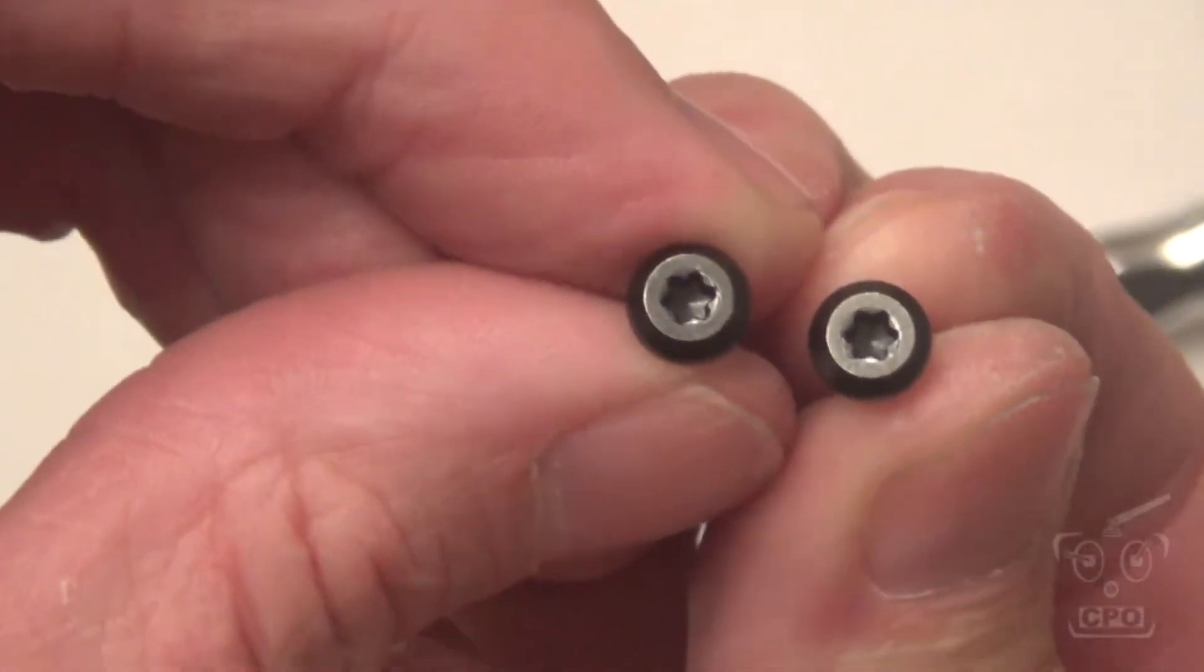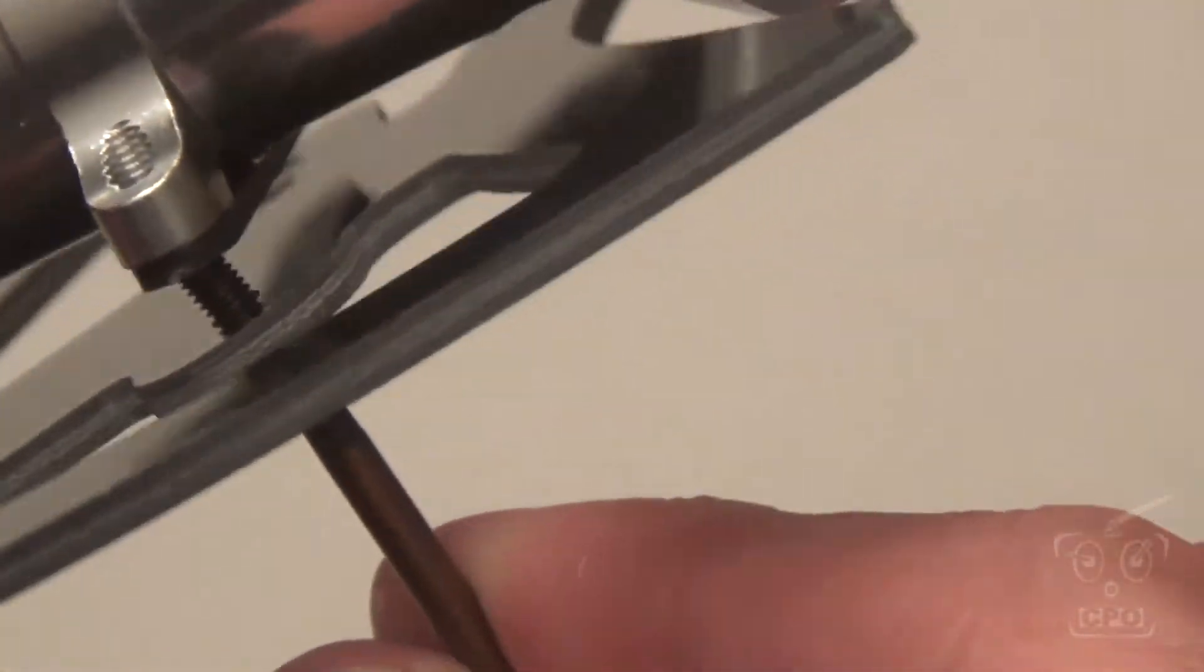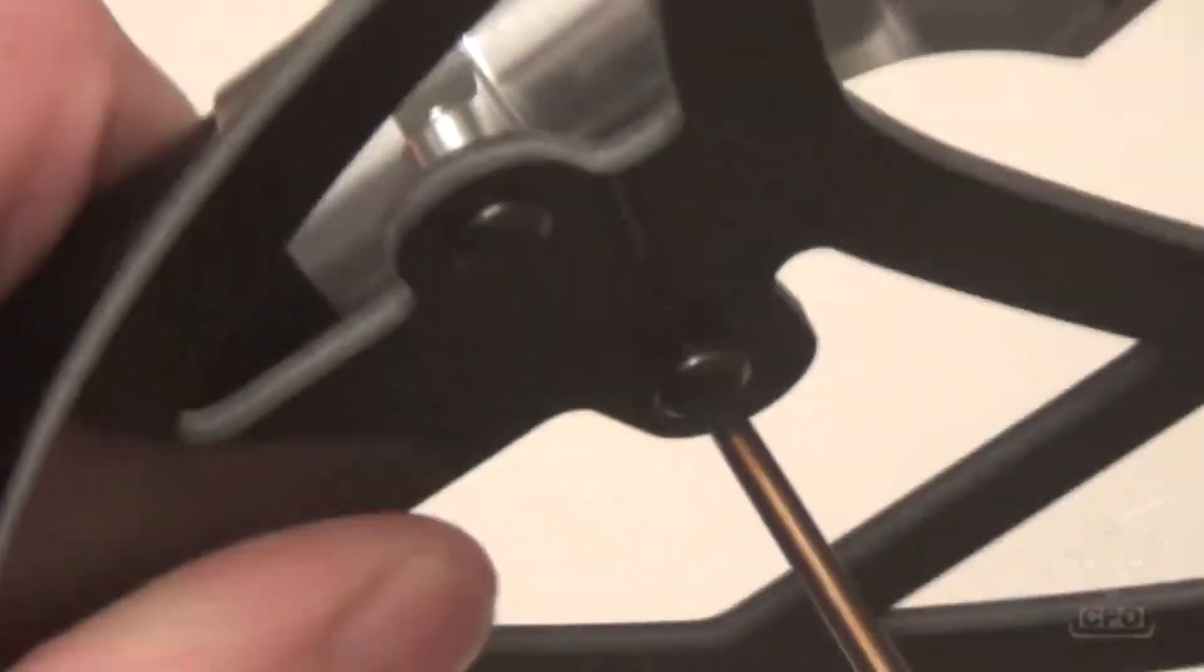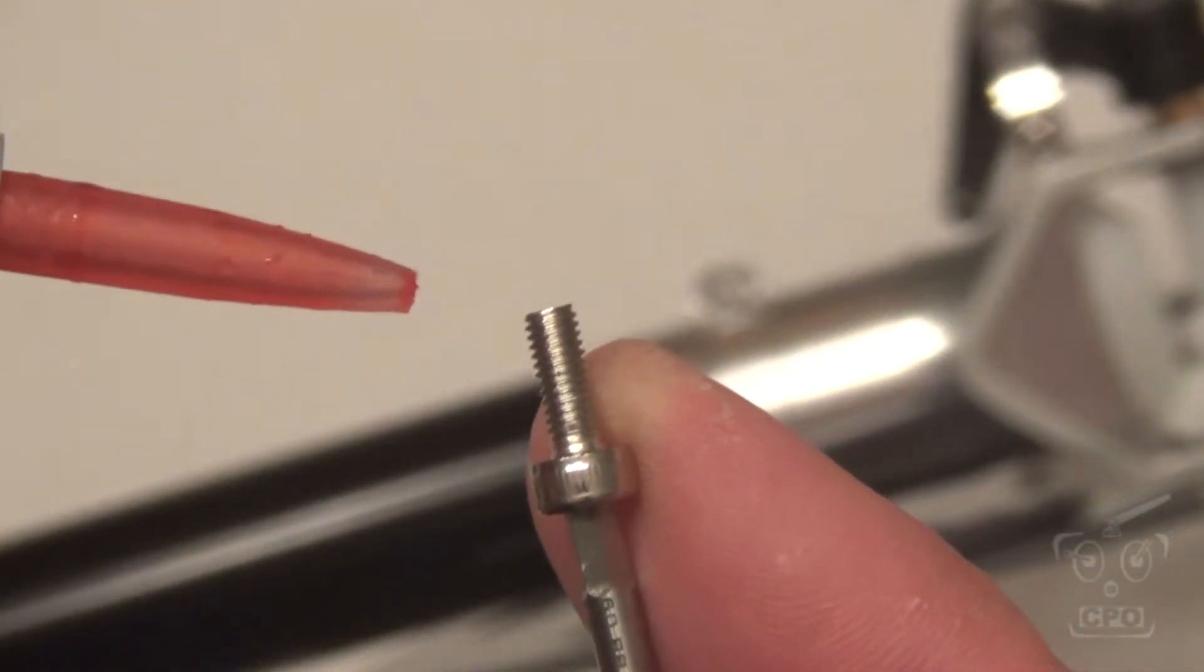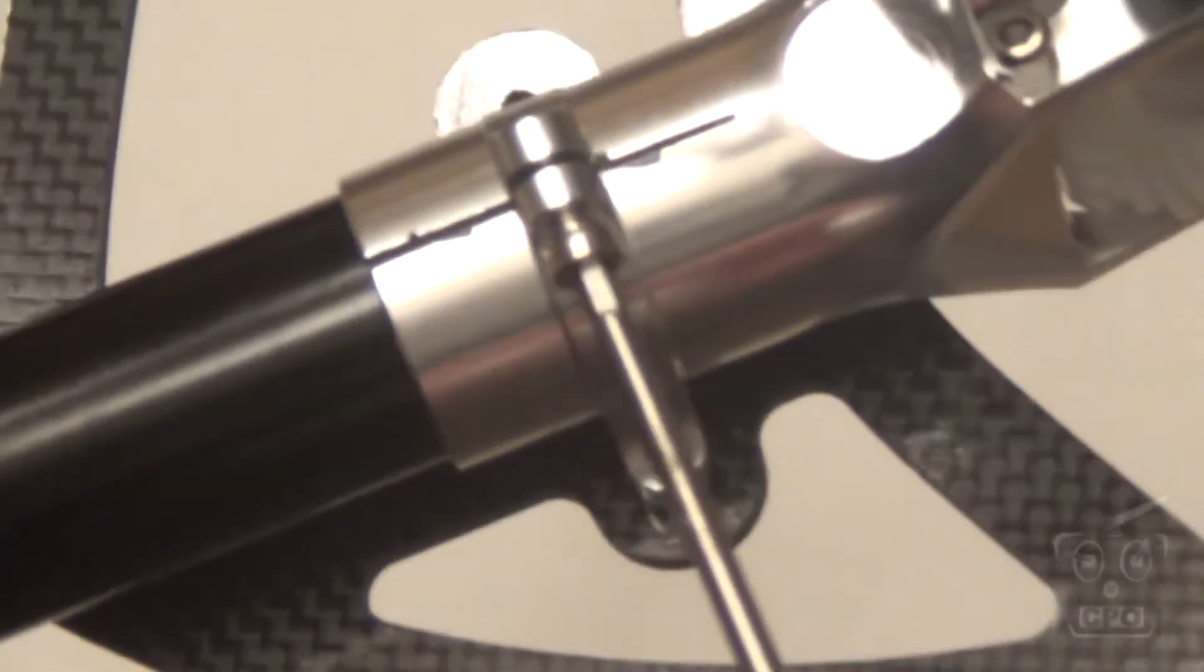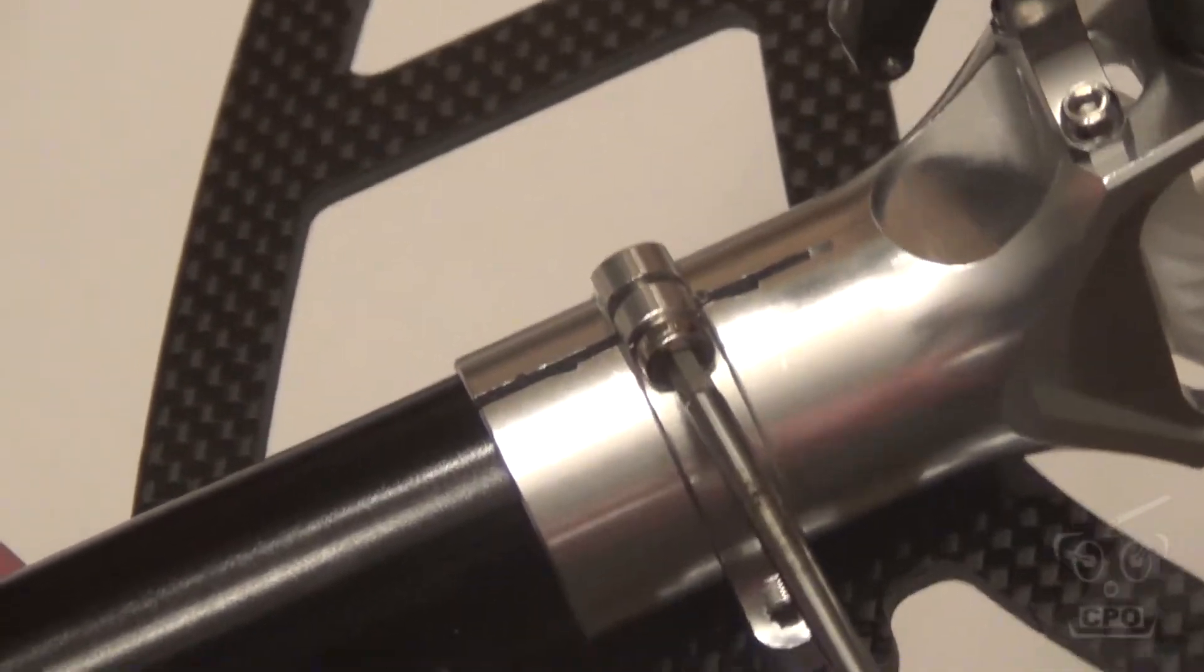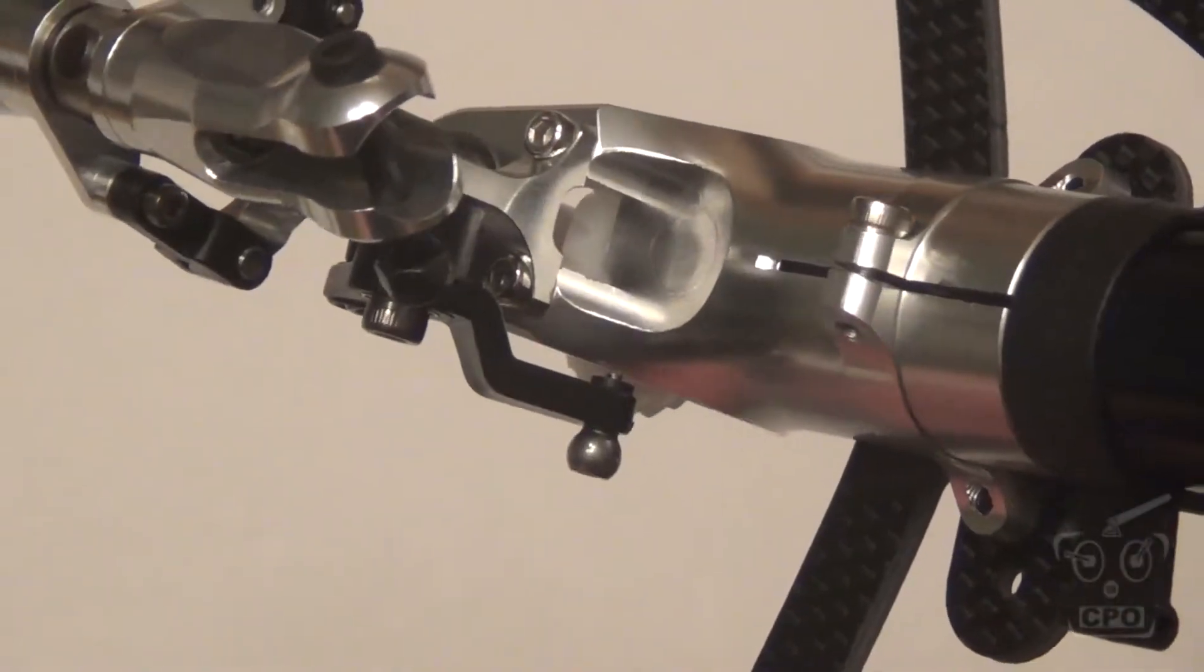So now these little screws are what we're going to use to attach the tail fin. All right. Starting to look like a tail assembly now. And then we've got these little silver colored screws, a couple of them. This one is going to be used to lock that tail assembly to the boom. And there we go. That part is done.